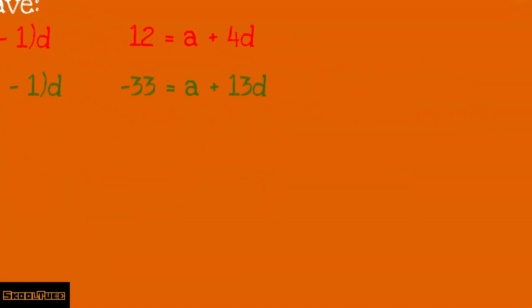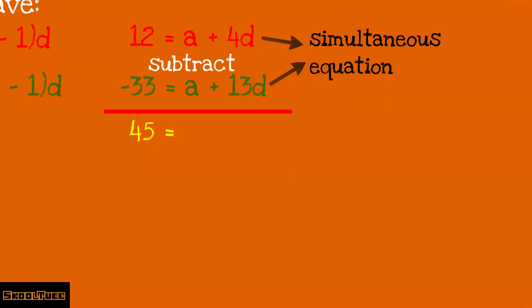Now let's look at this closely. You can see that we have two equations and two unknowns. This should remind you of simultaneous equations. You subtract the two equations to solve for the unknown. 12 minus minus 33 equals 45. a minus a gives us 0. 4d minus 13d gives us minus 9d. And that is why d ends up being minus 5.